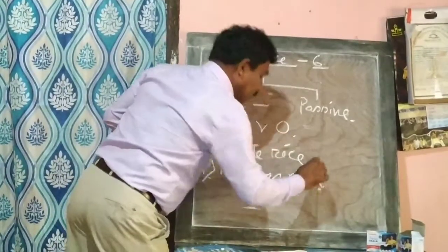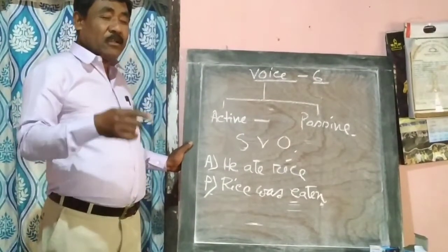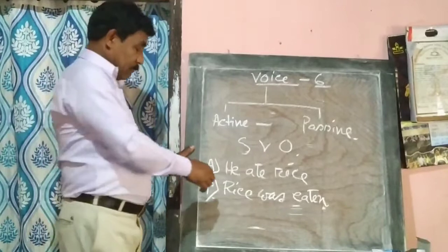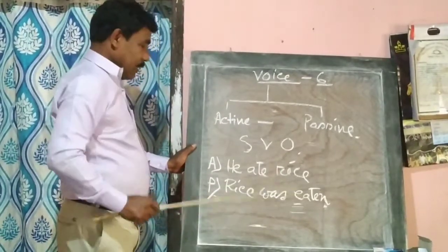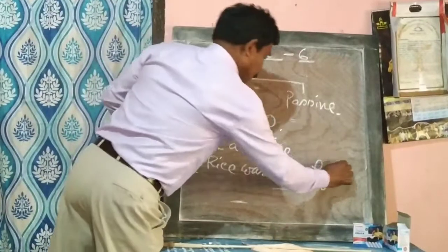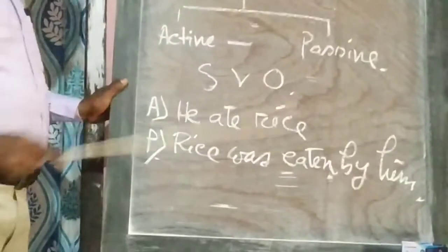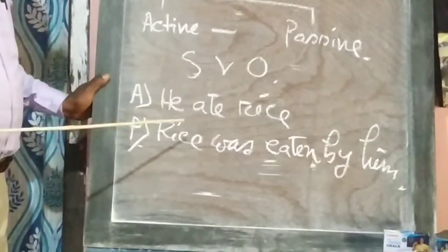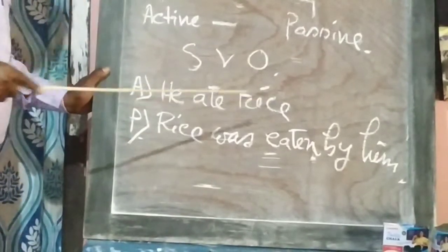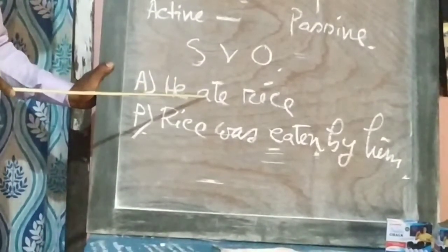In the first part, we add the preposition 'by' before the original subject. So the full passive sentence becomes: 'The rice was eaten by him.'